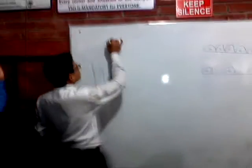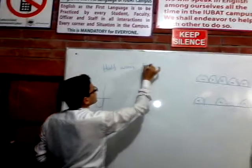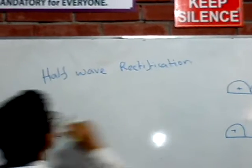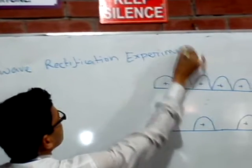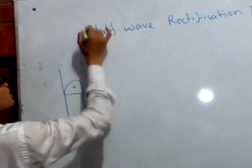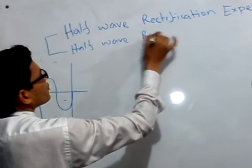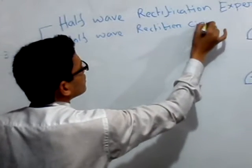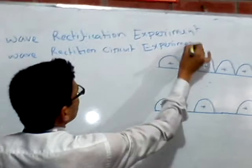The experiment is half-wave rectification. Write down the name of the experiment: half-wave rectification. You can also say half-wave rectifier experiment. Why is it called a half-wave rectifier experiment?